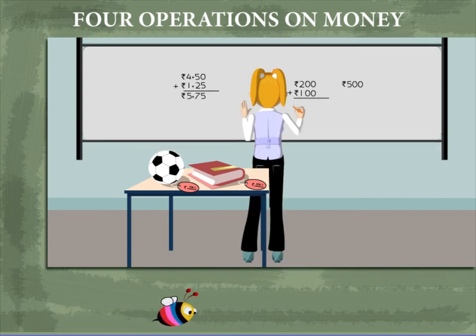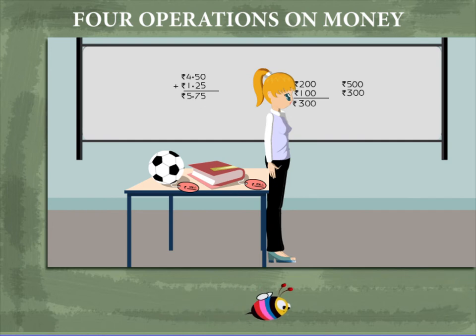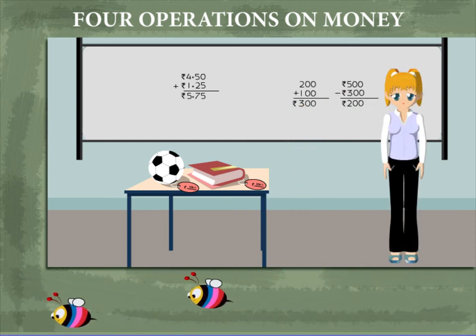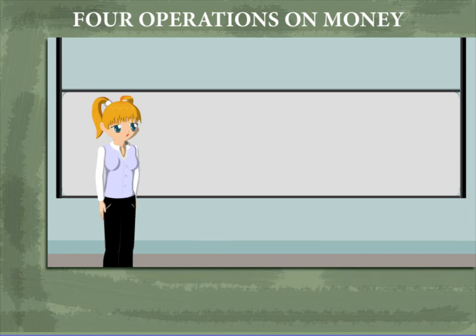Add the two, it makes rupees 300. Subtract 300 from rupees 500. Rupees 200 remain from the 500 rupee note.